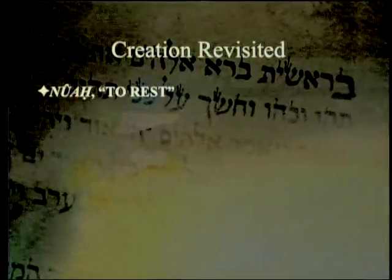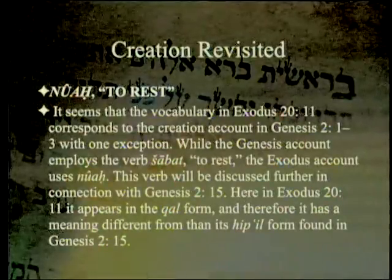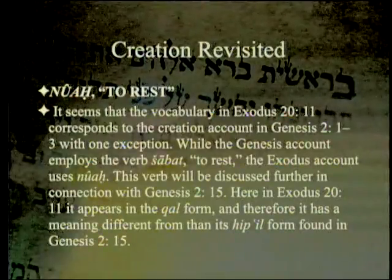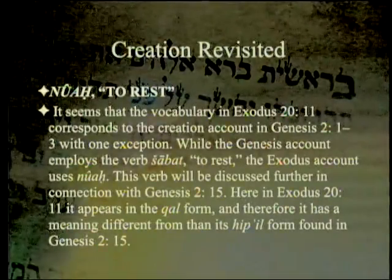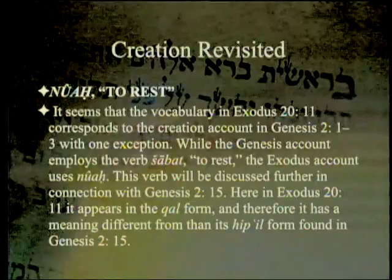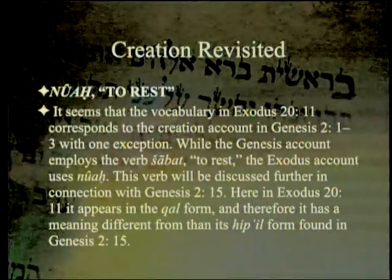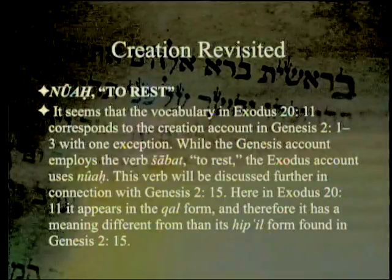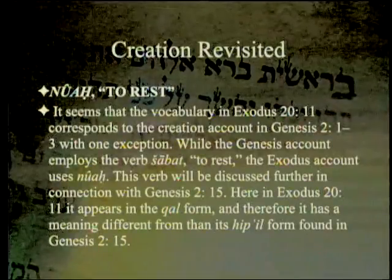Davidson made a similar point. The verb 'nuach,' meaning to rest, is where the name Noah is actually derived from. It seems that the vocabulary in Exodus 20:11 corresponds to the creation account in Genesis 2:1-3, with one exception: while the Genesis account employs the word 'shabbat,' the Exodus account uses 'nuach.' This verb will be discussed further in connection with Genesis 2:15.